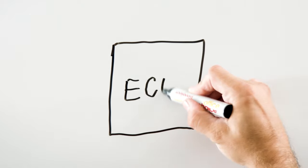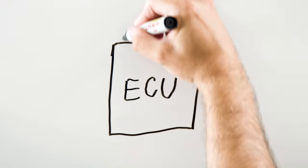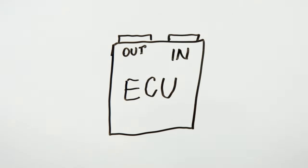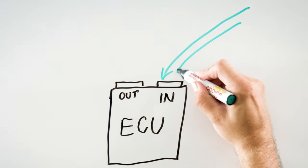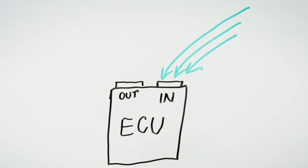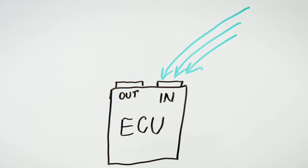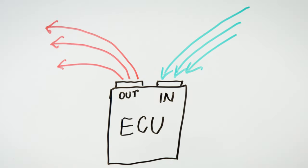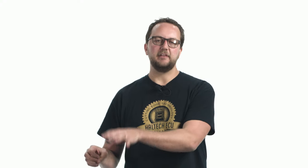An engine management system, or ECU, is a computer. It's got a bunch of inputs that come into the ECU from the engine, and then it's got a bunch of outputs that go out to injectors and ignition on the engine.